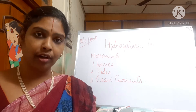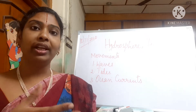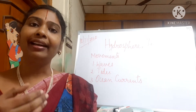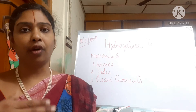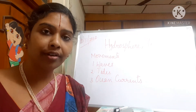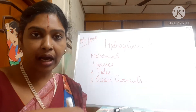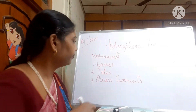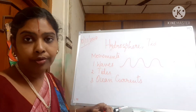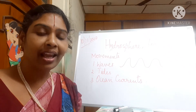The water in the ocean is never constant. This unresting water comes out in different forms — for example, waves, ocean currents, and tides. Waves are nothing but the upward and downward movement of water, and this is normally caused by blowing wind.